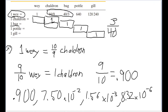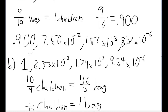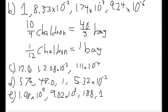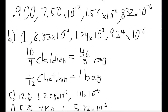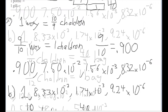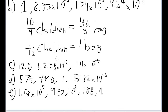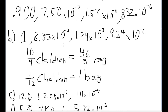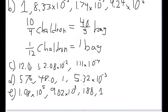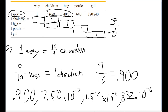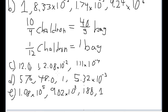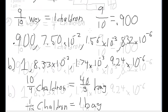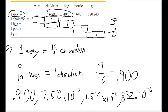For Part C, the bag column: 12 bags in a chaldron, one bag in a bag, 2.08 times ten to the two bags in a pottle, and 1.11 times ten to the negative four bags in a gill. For Part D, the pottle column: 576 pottles in a chaldron, 48.0 pottles in a bag, one pottle in a pottle, and 5.32 times ten to the negative three pottles in a gill. For Part E, the gill column: 1.08 times ten to the fifth gills in a chaldron, 9.02 times ten to the third gills in a bag, 188 gills in a pottle, and one gill in a gill.